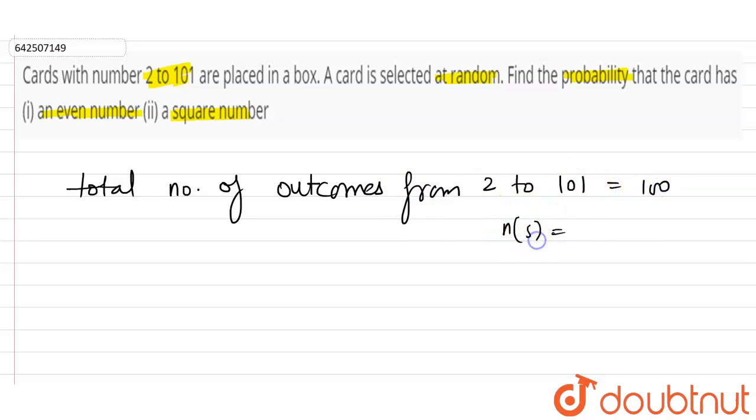Now let E₁ be the event of selecting a card which is even number, which is equals to numbers like 2, 4, 6 goes up to 100. Because the last number must be 100.